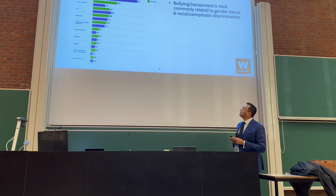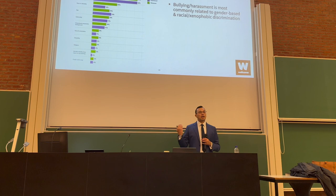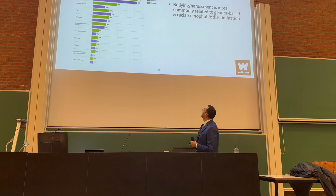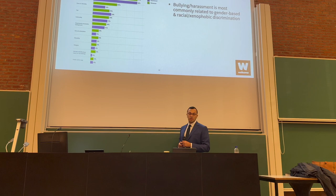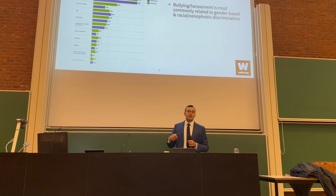The Wellcome Trust also researched the causes of this problem. Bullying and harassment was rated as one of the highest reasons for dissatisfaction. When you look at the causes of bullying and harassment within research environments, gender is the highest category, followed by race and ethnicity, age, and nationality — all extremely high in terms of the proportion of people who both experience and witness harassment on these bases. For the rest of my talk, I'll focus more on racial and xenophobic discrimination, as that's something I have more direct experience with.